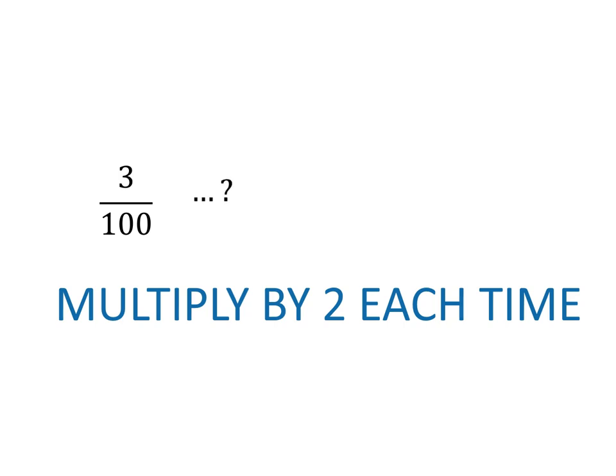Remember that if you multiply a fraction by a whole number, you just need to multiply the numerator. 3 over 100 times 2 is 6 over 100, because 3 times 2 is 6.